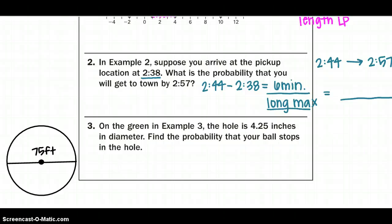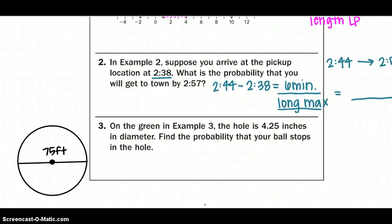Alright, and the third one, on the green in example three, the hole is now smaller, and our diameter is only 4.25. What's the probability that the ball will stop in the hole? Alright, remember we want the probability that it will be in the hole. So the area of our hole divided by the entire area of the green.